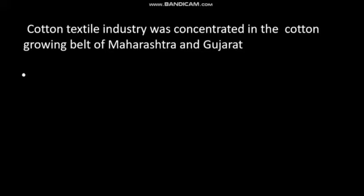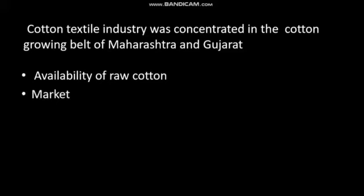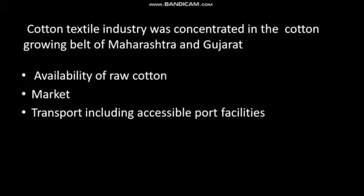Maharashtra and Gujarat were major producers of cotton, so raw cotton was readily available. Second, there was a strong market. Third, transport — including accessible port facilities — meant Gujarat and Maharashtra had ports which helped in the transportation of finished goods to various locations.